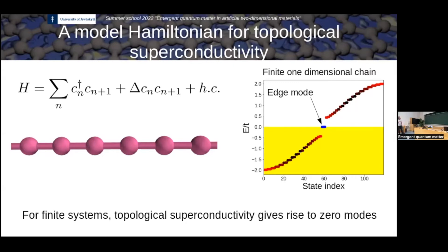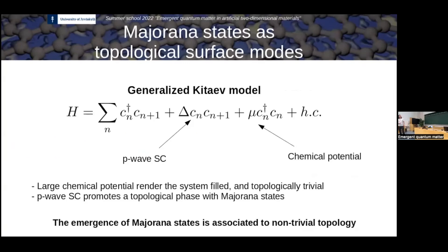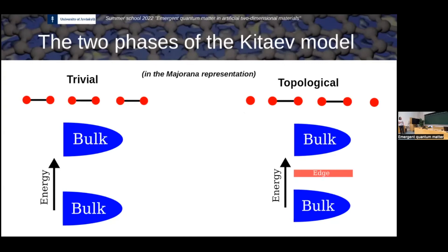The basic idea is that in nature, it is very hard to find one-dimensional superconductors — actually impossible in practice. So if we want to create some one-dimensional unconventional superconductor, we need to engineer it somehow using certain ingredients. Before moving to the materials part, let me briefly emphasize that the appearance of these zero modes is related to the topologically non-trivial structure of this Hamiltonian — in particular the topologically non-trivial structure of the gap matrix. The details we will address in the lecture on Friday. So let me move on to how to engineer this actually in nature.